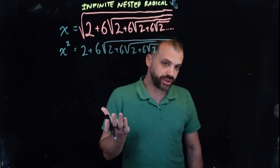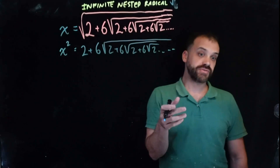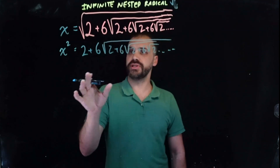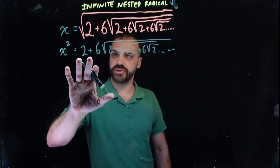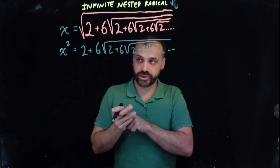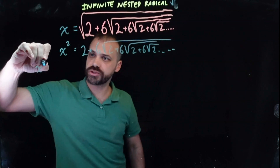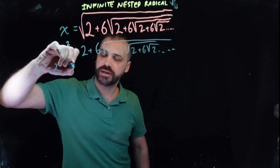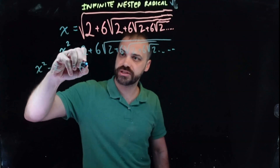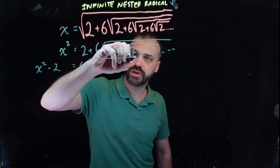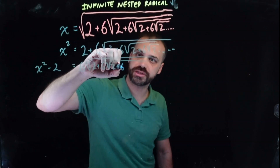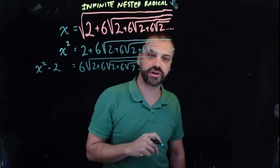It doesn't feel like we've made any progress because we still have this forever and ever. The next thing: we've got this 2 here, so we can subtract 2 from both sides. x squared minus 2 equals — subtracting 2 from the right side — we have positive 6 times the square root of 2 plus 6 times the square root of 2 plus 6 times the square root of 2, forever and ever.